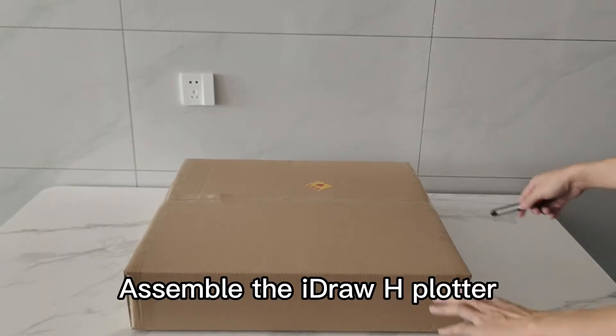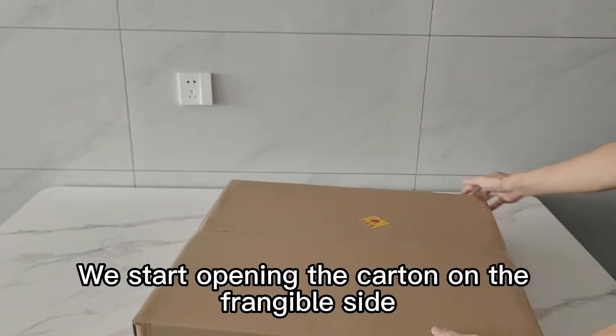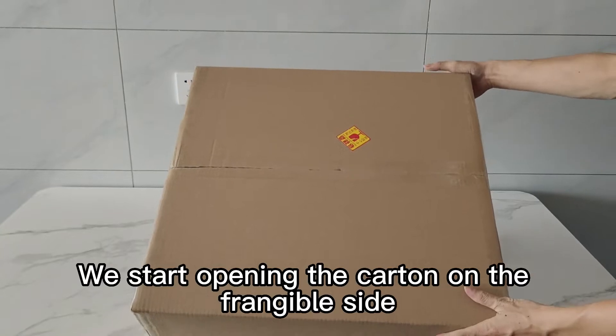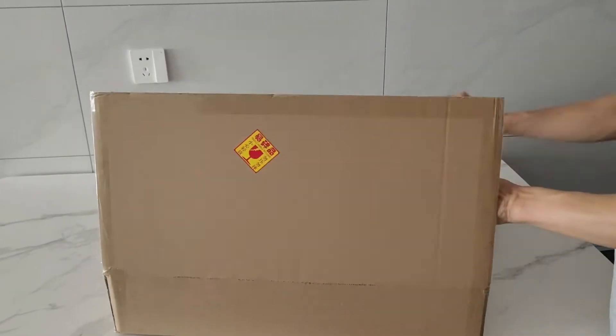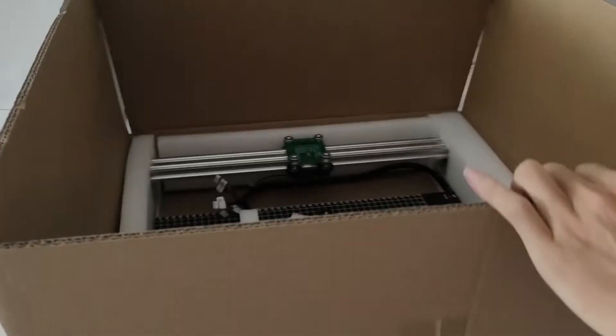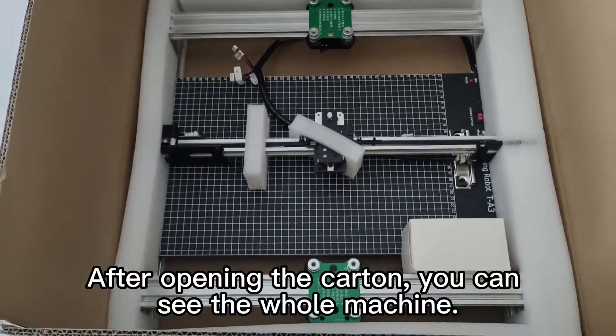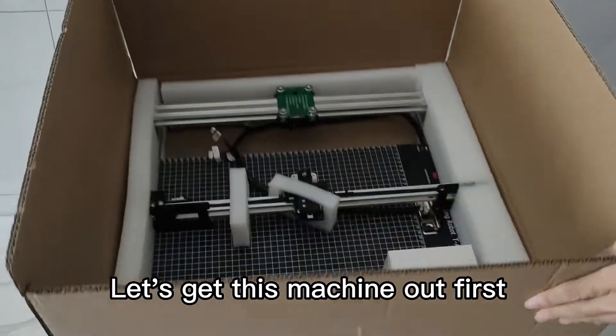Assemble the IDRAW-H plotter. Prepare a knife. We start opening the carton on the frangible side. After opening the carton, you can see the whole machine. Let's get this machine out first.